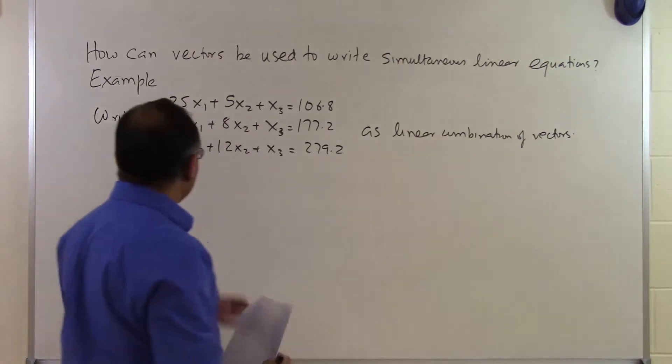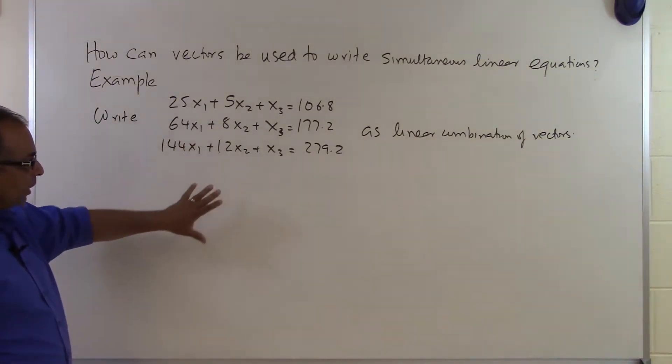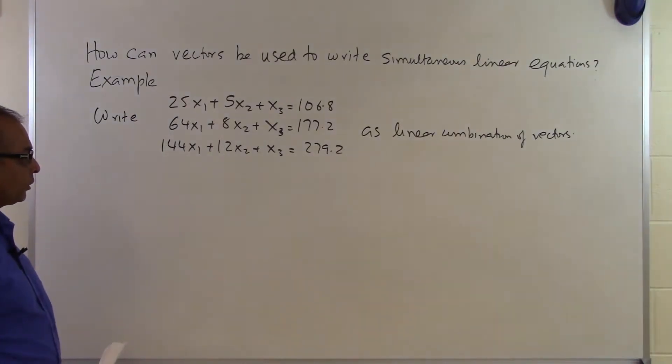So the problem statement is saying you are given these three simultaneous linear equations, where x1, x2, and x3 are the unknowns, and we want to write them as a linear combination of vectors.